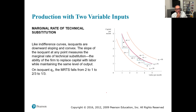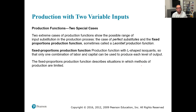The slope of the isoquant at any point measures the MRTS — the ability of a firm to replace capital with labor while maintaining the same level of output. On isoquant Q2, the MRTS falls from 2 to 1, then to 2/3, and then to 1/3, showing that the MRTS is diminishing along the curve.